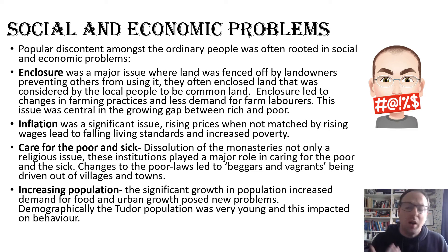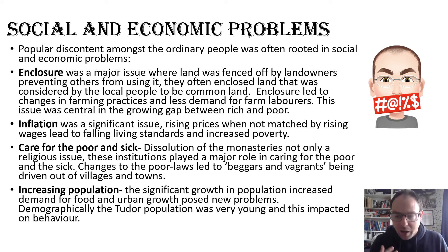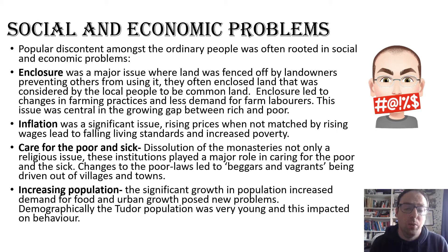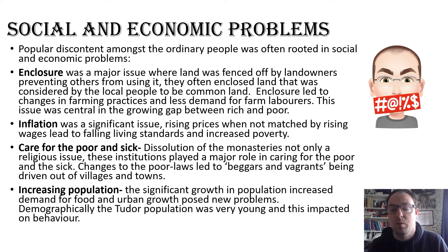Another major economic problem for people in Tudor England was inflation. Rising prices were generally not matched by rising wages, leading to falling living standards and increased poverty amongst a large part of the Tudor population — a reason that caused people to dislike the monarchy and rebel against the various Tudor monarchs. Another key issue was care for the poor and sick. The dissolution of the monasteries under Henry VIII was not only a religious issue — it got rid of monasteries that had played a major role in the lives of English people, caring for the poor and sick. That has a big impact and is a reason why there is resistance to the dissolution of the monasteries, as we see in the Pilgrimage of Grace, one of the key rebellions.